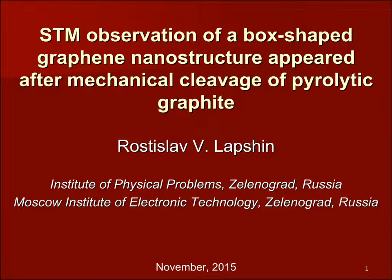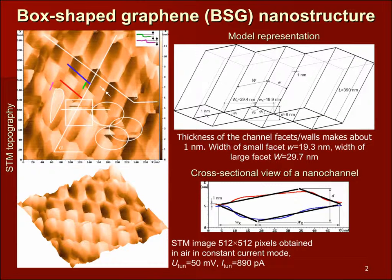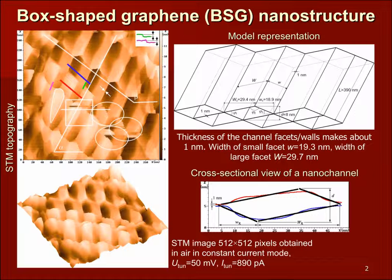Let me remind that graphene is a single monolayer of carbon atoms forming a hexagonal two-dimensional crystal lattice. Actually, graphite crystal can be thought as a stack of graphene sheets. Those who have dealt with graphite know that graphite surface under a scanning tunneling microscope looks dull and uniform, as a rule. All you see is usually plain areas of surface of several microns in size, bounded by cleaving steps, without any features.